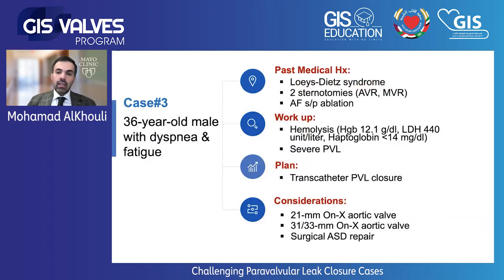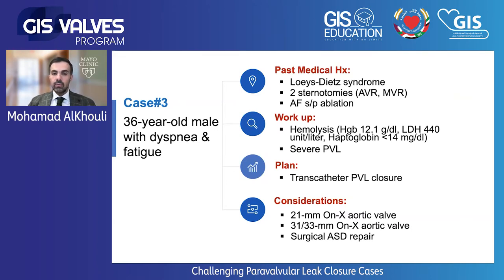The third case is also a unique case of a patient who has a double mechanical valve — a 21-millimeter Onyx aortic valve and a 31/33-millimeter Onyx mitral valve. The patient is young, has Loeys-Dietz syndrome, two prior sternotomies for each valve sequentially, had AFib ablation, and came in with pretty bad and symptomatic hemolysis.